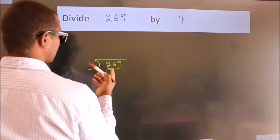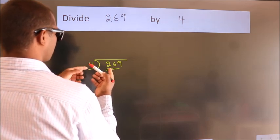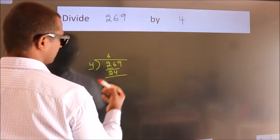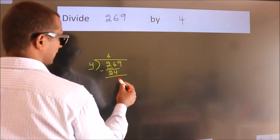A number close to 26 in the 4 table is 4 times 6 equals 24. Now we subtract and get 2.